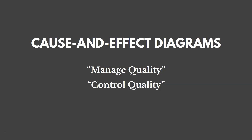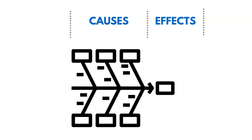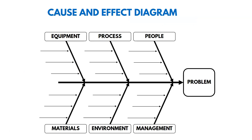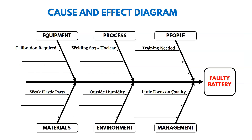Another tool we could use in this knowledge area is cause and effect diagrams. We might use this in Manage Quality or Control Quality. It helps us organize and display the origins of a quality problem, and it's sometimes called a fishbone or Ishikawa diagram. On the left-hand side are causes and on the right-hand side is the effect. For example, if we have a faulty battery like the Samsung Galaxy Note 7, we could categorize different causes of that problem so we know what to address.